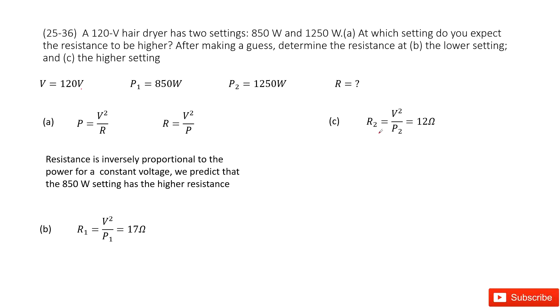Similarly, at R2, we can see it is V squared divided by P2. And then input V and P2, you can get the resistance for R2 as 12 ohms.